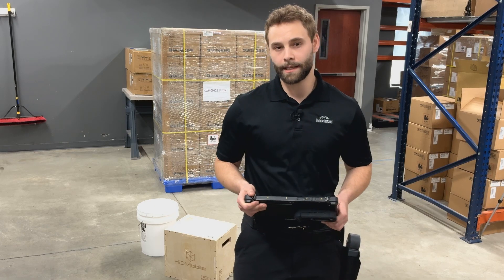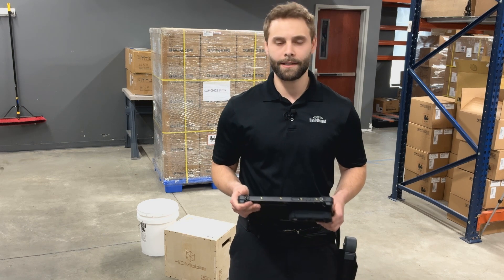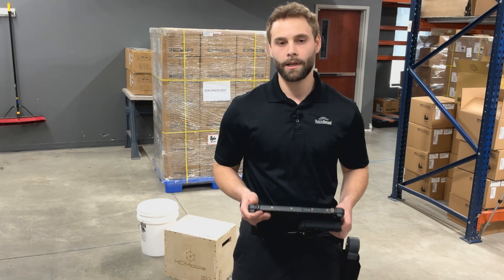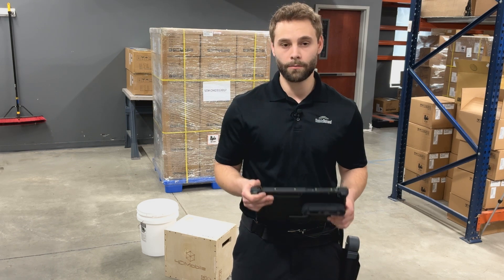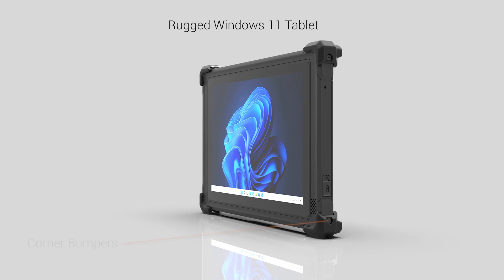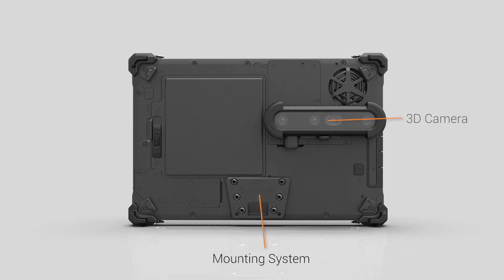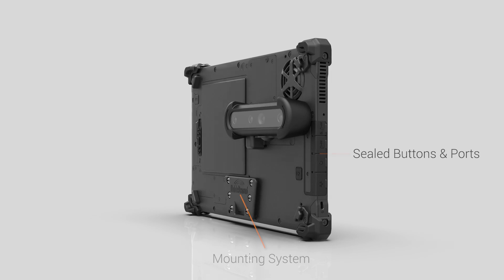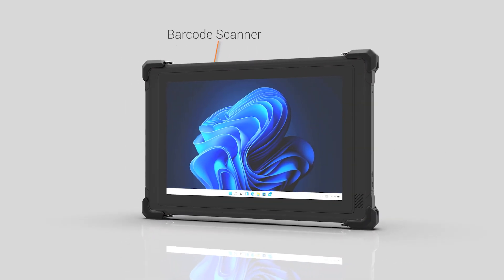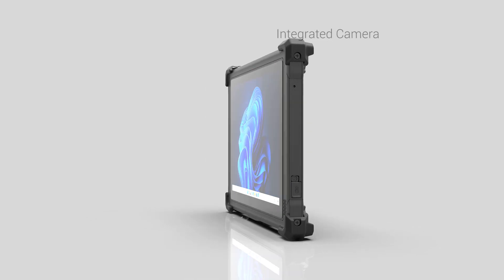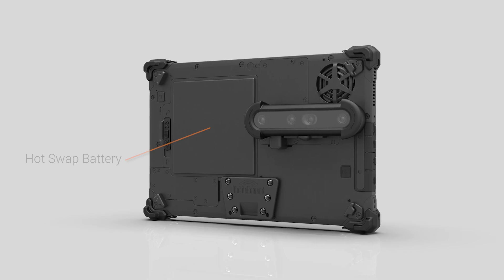We'll first begin by taking a look at the tablet itself as well as the software that enables that application, and then take you through a high-level overview of what someone who knows how to use this solution's experience should be. The system itself is a rugged Windows 11 tablet equipped with a three-dimensional camera on the back that allows for dimensional capture. You can also capture other forms of data input such as the barcode scanner, additional photos using the integrated camera, as well as other functions such as the hot swappable batteries that allow continued usage throughout the day.